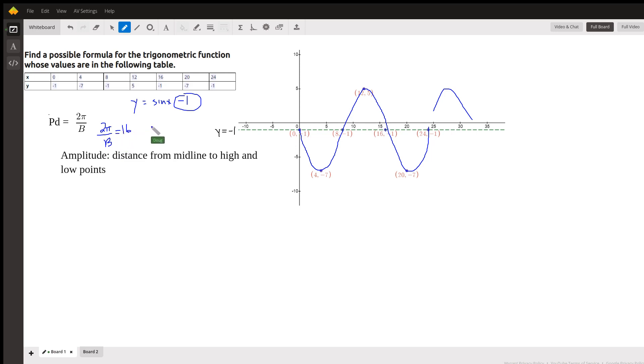Now, one way to solve that for b is to take the reciprocal of both sides. Whoops, let's write b over 2π equals 1/16. So b equals 2π over 16, which is π over 8, and we'll see what we mean by b in just a second.